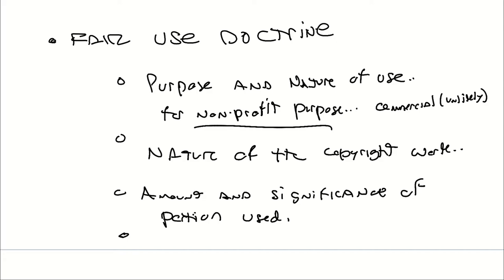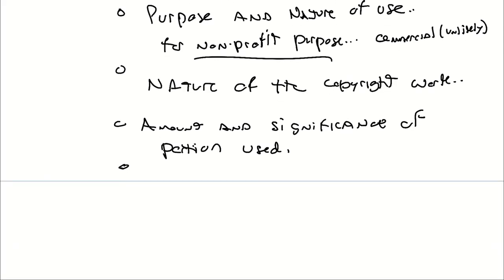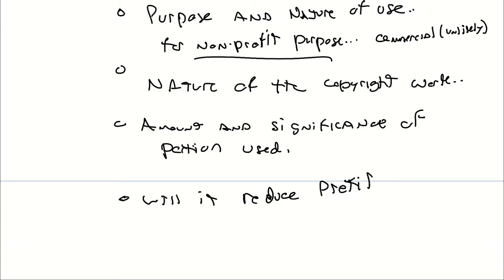The last factor is the effects on the potential market or value of the copyrighted work — it comes down to money essentially. Will it reduce profit for the copyright holder? If you put the entire copy of Avengers: Endgame on YouTube and then added a one-minute discussion about the movie, is that going to reduce the sales of Avengers: Endgame?